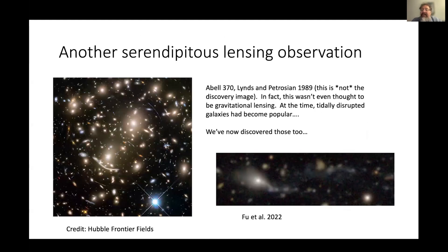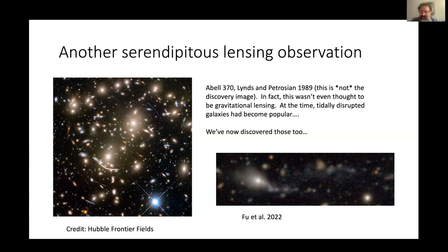Less than ten years later, another serendipitous discovery launched my career: gravitational lensing in galaxy clusters. On the left you see the Hubble Frontier Fields image of Abell 370, a galaxy cluster discovered in 1989 because a giant arc at the bottom left was bright enough to detect with the telescopes and primitive CCDs of the time. Interestingly, the original paper did not refer to it as a gravitational lens — people were thinking about tidal disruption of galaxies — so the first paper called it a potentially tidally distorted galaxy in a galaxy cluster.